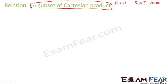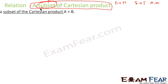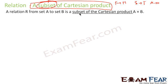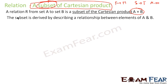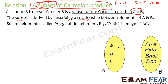Please note: 'subset' is a very crucial word. A relation is a subset of Cartesian product A cross B, and that subset is derived by describing a relationship between A and B. Because we can have n number of subsets, to create a subset we should have a relationship. This is the relation which we are following.